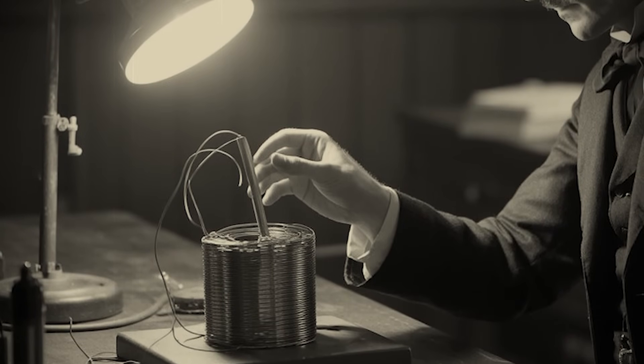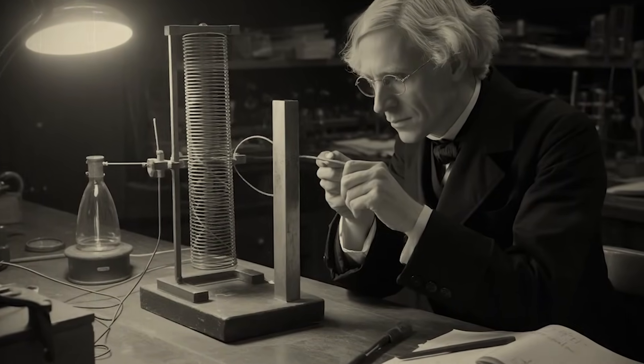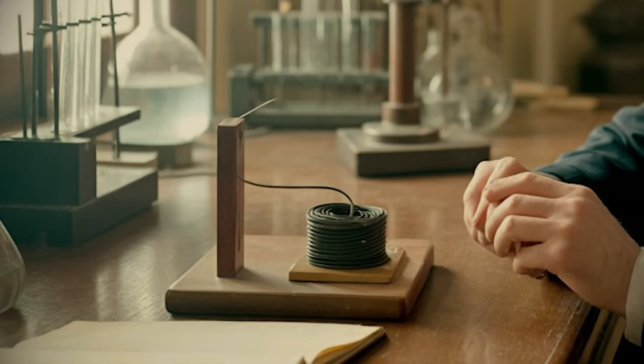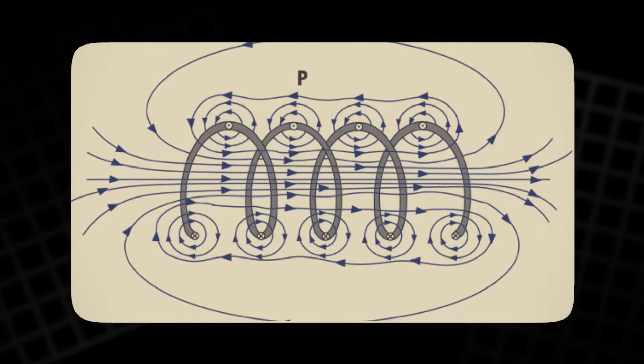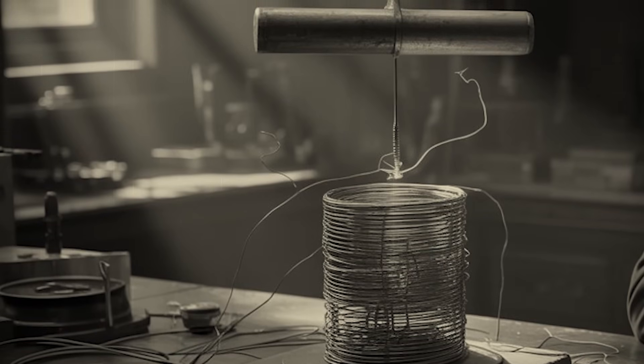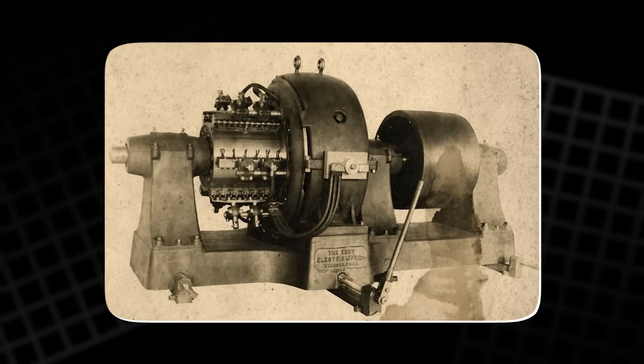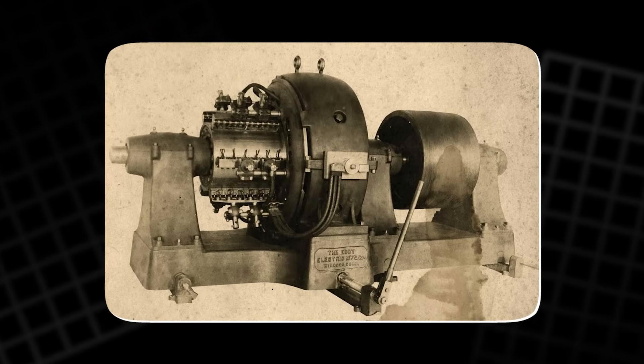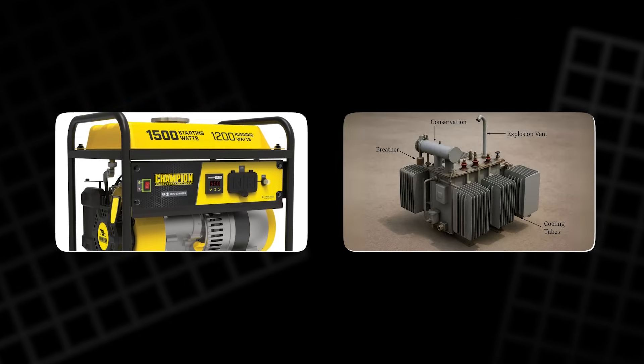It suggested that an electric current could be generated without any external power source, simply by the motion of a magnet within a coil. This was the first demonstration of electromagnetic induction, the phenomenon where a changing magnetic field induces an electric current in a conductor. This discovery would later form the basis for the development of electric motors, generators, and transformers, which would come to shape the modern electrical age.